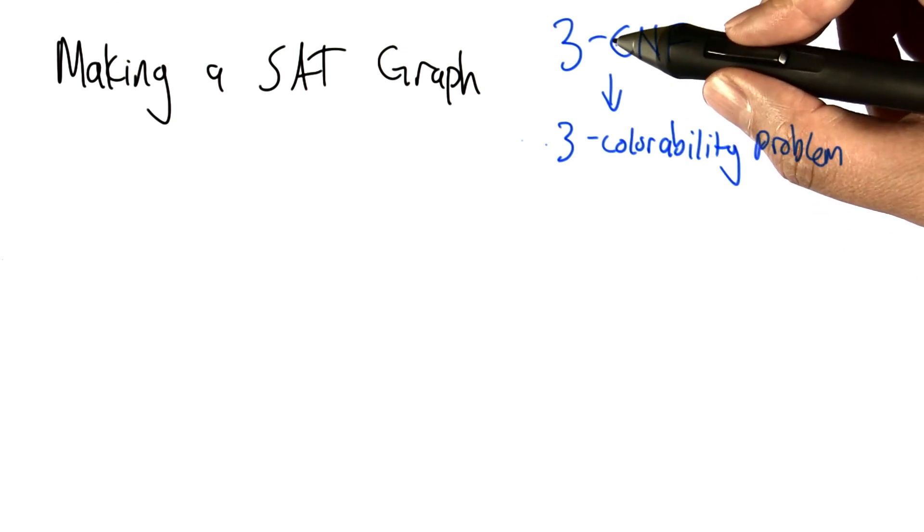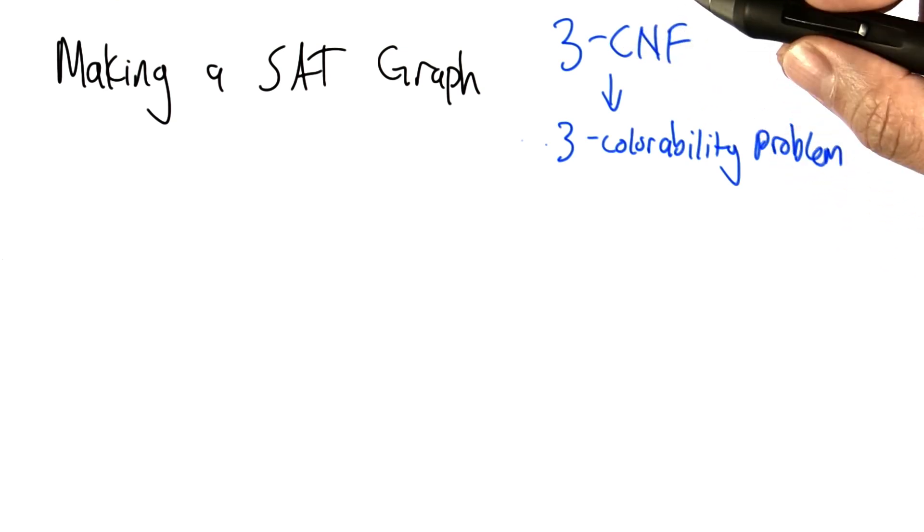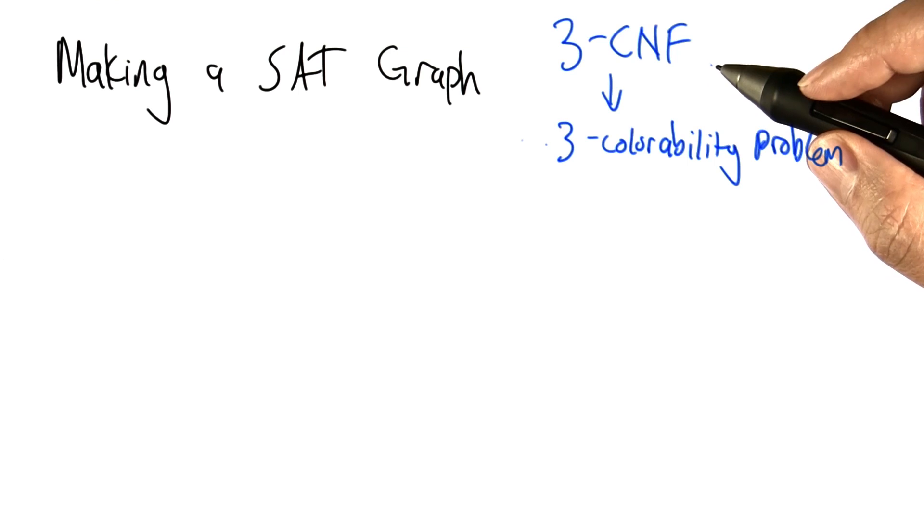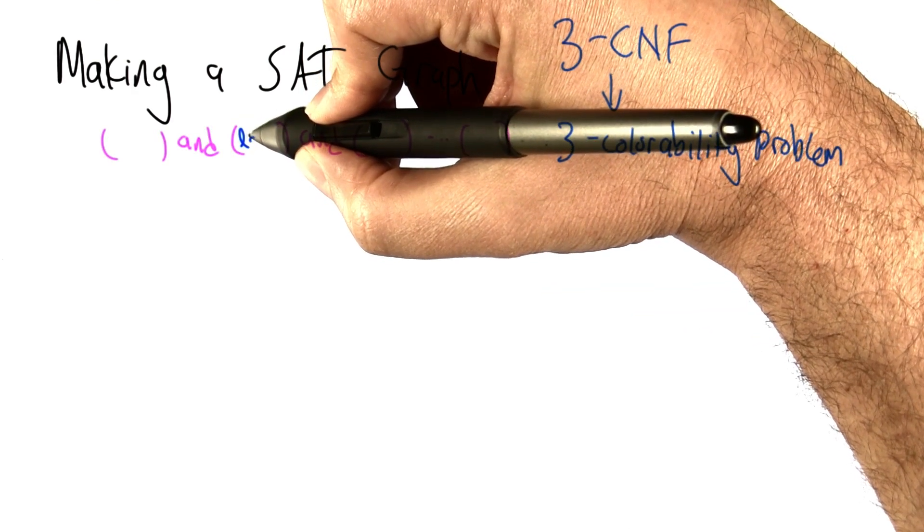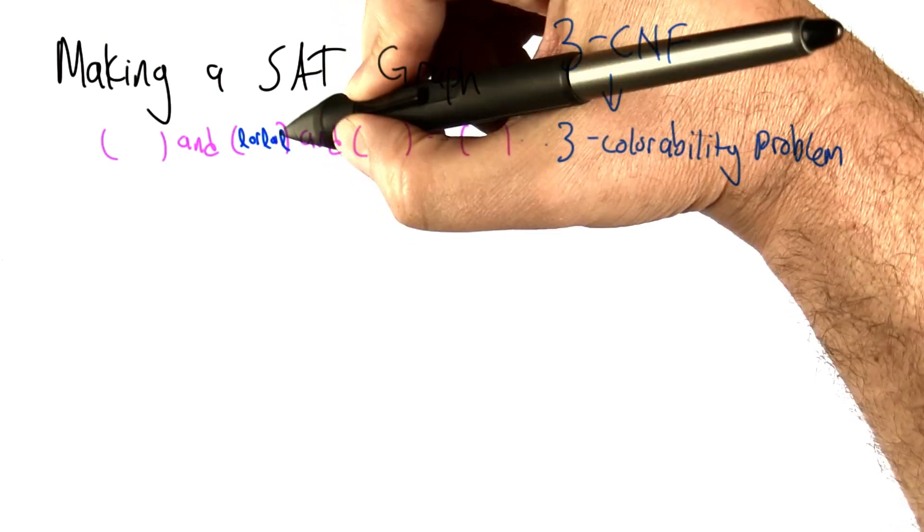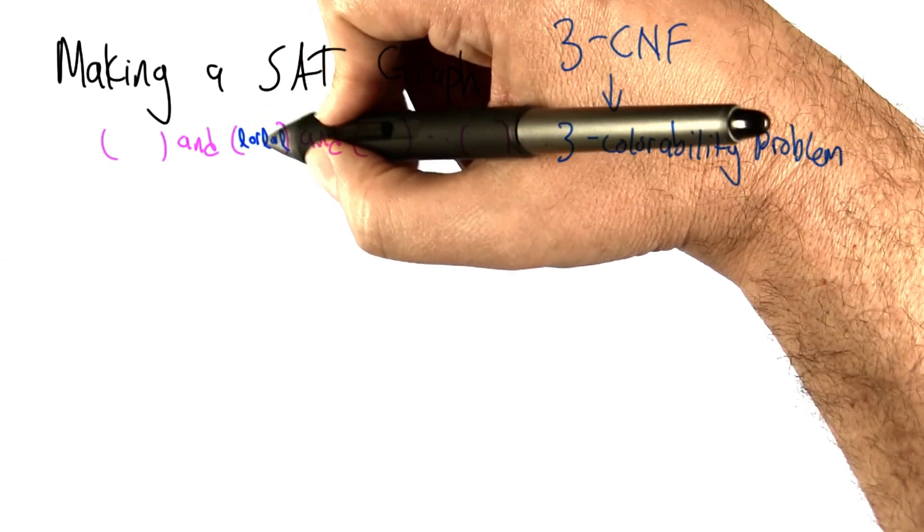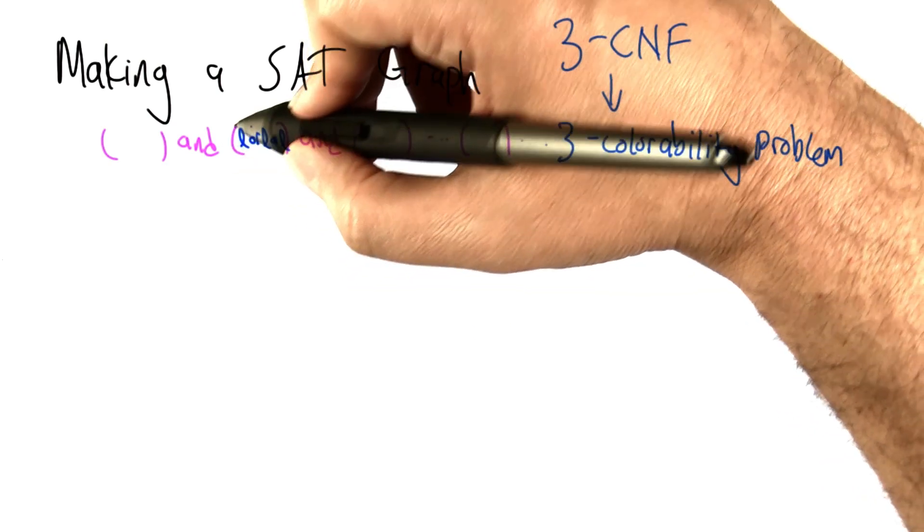So, CNF here just means conjunctive normal form. It's just that form that I showed you before where the formula is the end of a bunch of clauses, and each clause is the or of 3 literals, and each literal is either a variable or its negation, not that variable.